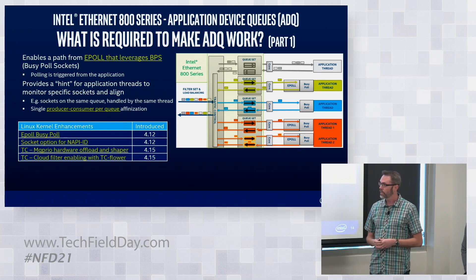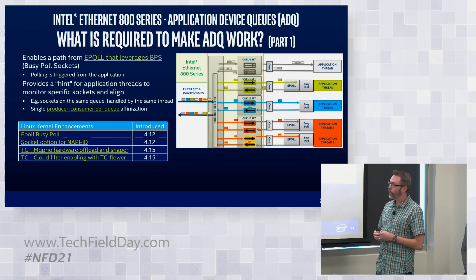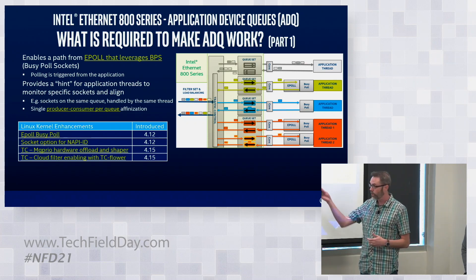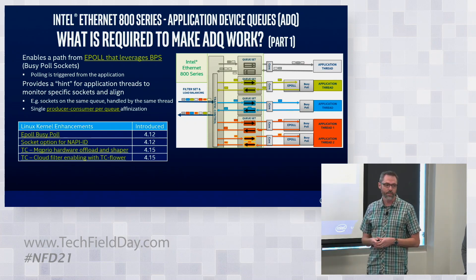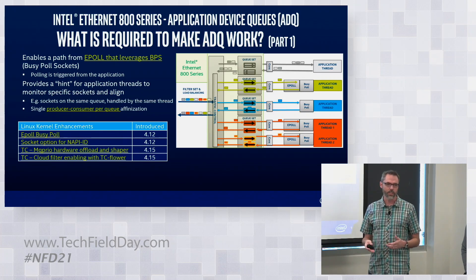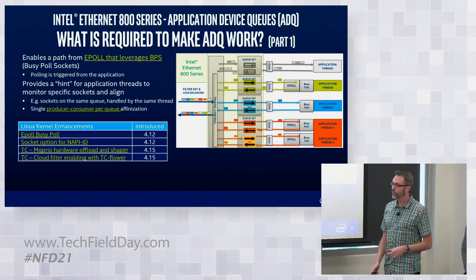Between the kernel enhancements — the affinitization of an application to a set of queues, the polling, and the other performance features — you really start getting this kind of integration. Many of these features are already available; kernels 4.12 and 4.15 have been around for a while, but it was hard to use all of them together. What we're providing with ADQ is an integrated set of things — an integration that's consumable for the end user so they can configure their application to benefit from this setup using our hardware offloads.